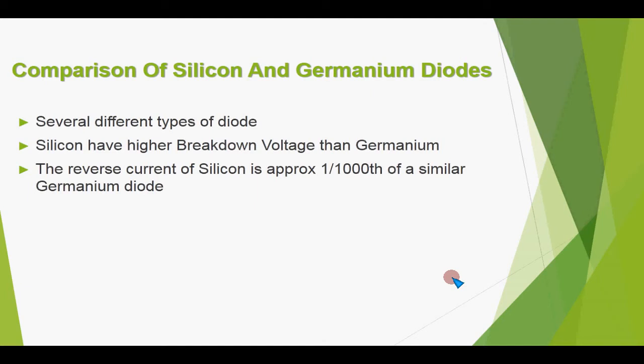Hello friends, welcome to the expert group. Our today's topic is comparison of silicon and germanium diodes. Both germanium and silicon diodes are available in the market, and when we have to use these diodes, we need to know the characteristics upon which we will prefer one diode over the other. We will compare these two and their characteristics in different circumstances.